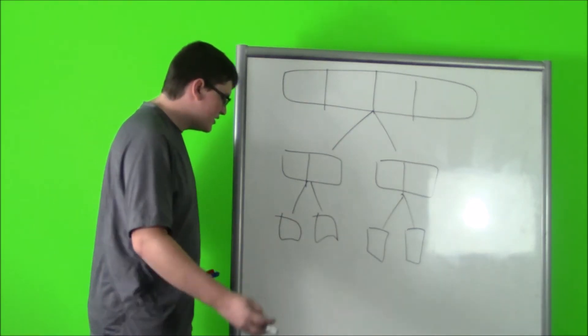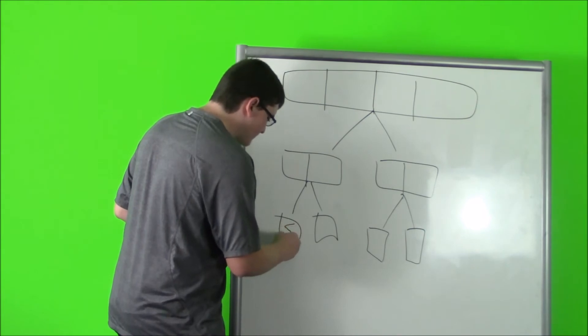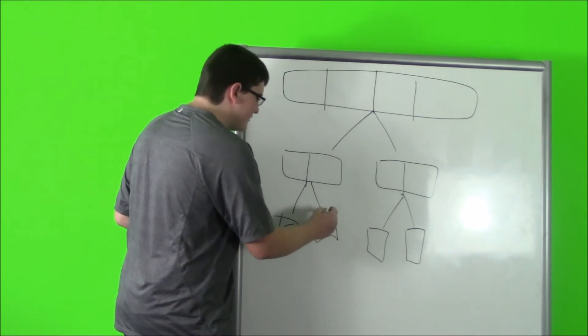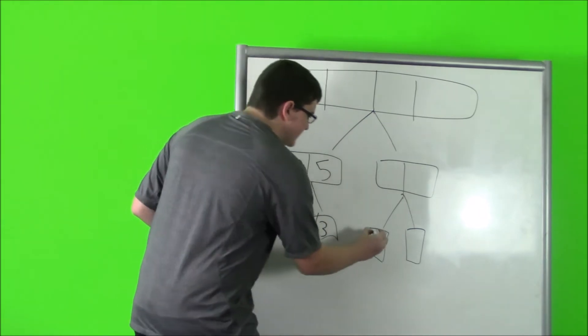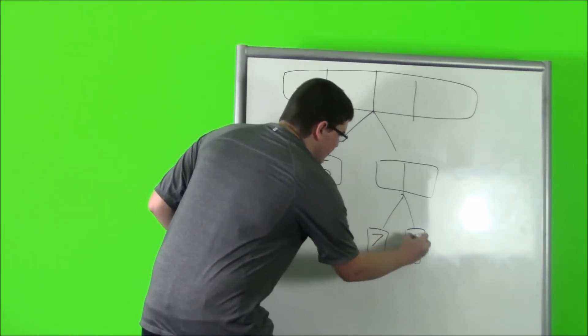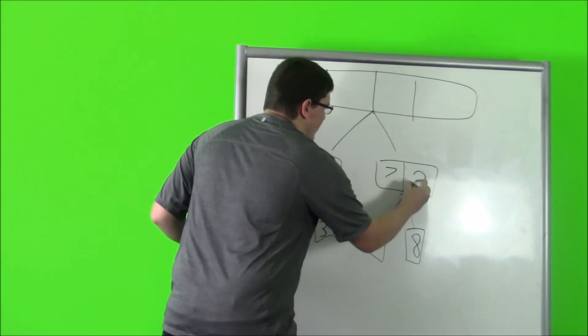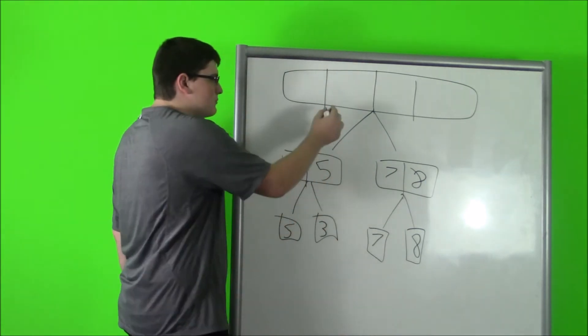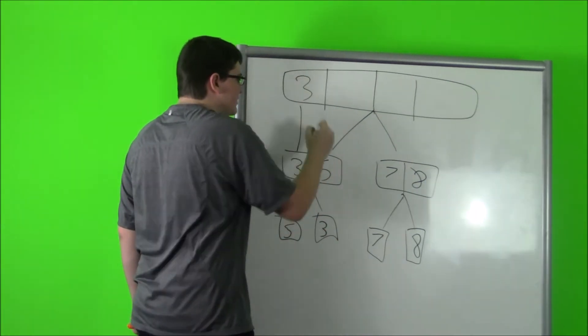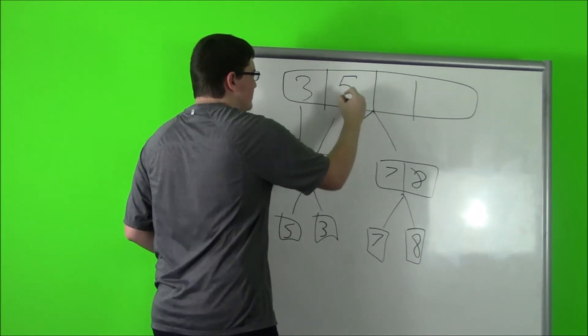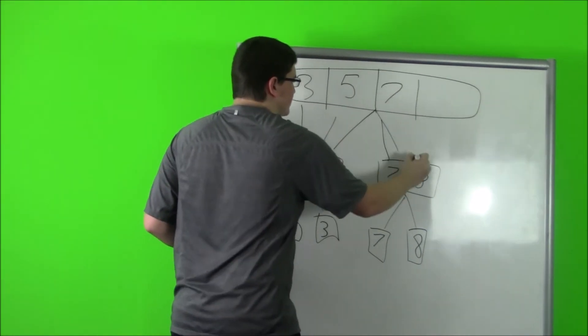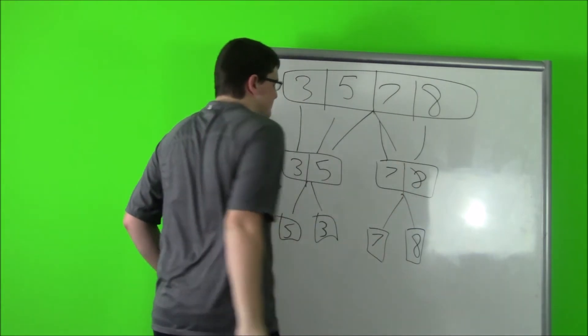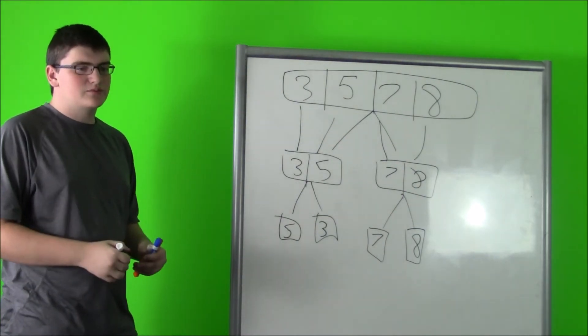So if I had numbers 5 and 3, 3 would go first then 5. If I had 7 and 8, 7 would go first then 8. When it combines to the big array, it would go 3, 5, 7, 8. That's how merge sort works in very basic terms.